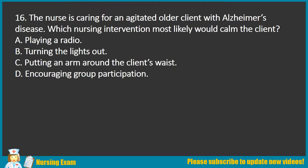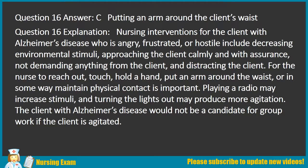Question 16. The nurse is caring for an agitated older client with Alzheimer's disease. Which nursing intervention most likely would calm the client? A. Playing a radio. B. Turning the lights out. C. Putting an arm around the client's waist. D. Encouraging group participation. Answer: C. Putting an arm around the client's waist.